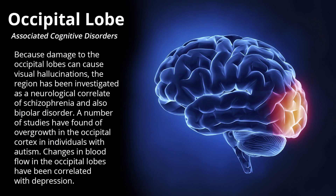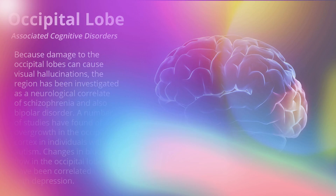Cognitive disorders associated with the occipital lobe: Because damage to the occipital lobes can cause visual hallucinations, the region has been investigated as a neurological correlate of schizophrenia and also bipolar disorder. A number of studies have found overgrowth in the occipital cortex in individuals with autism. Changes in blood flow in the occipital lobes have been correlated with depression.